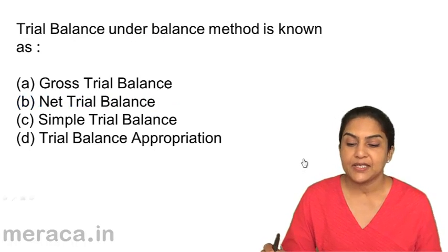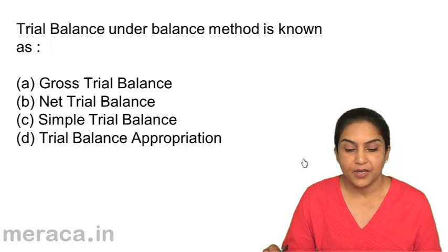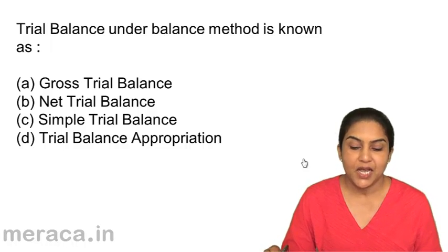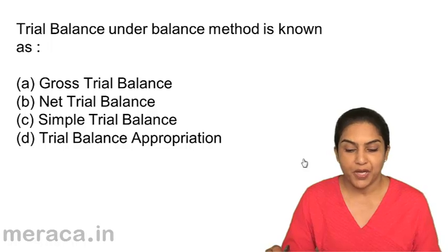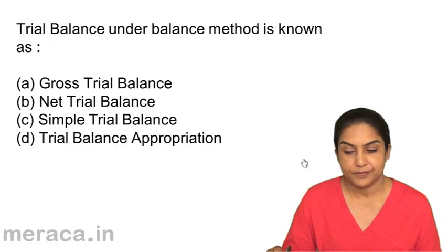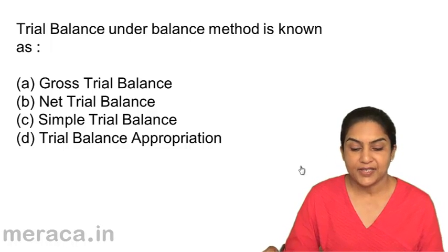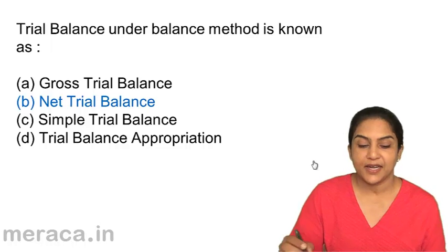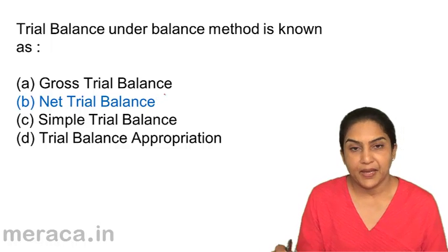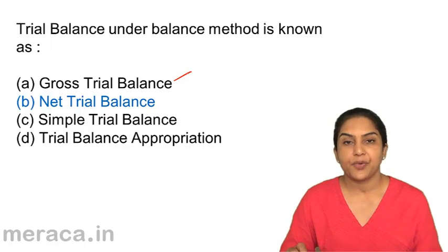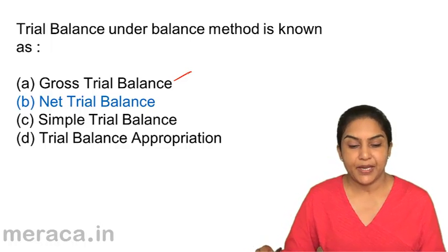Trial balance under the balance method is known as: A, gross trial balance; B, net trial balance; C, simple trial balance; D, trial balance appropriation. The trial balance is known as net trial balance. The correct answer is B. When it's totals, it's called a gross trial balance, but otherwise it's called a net trial balance.